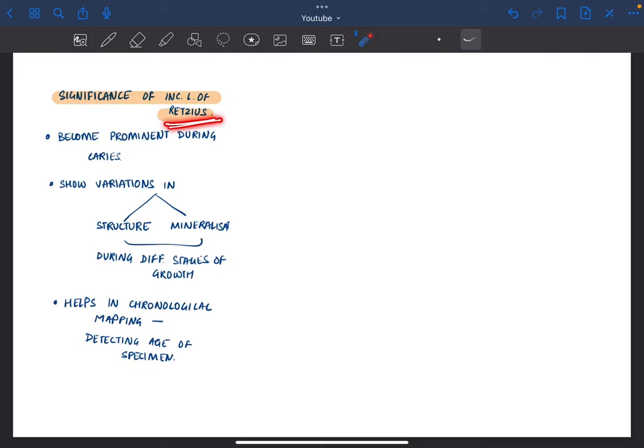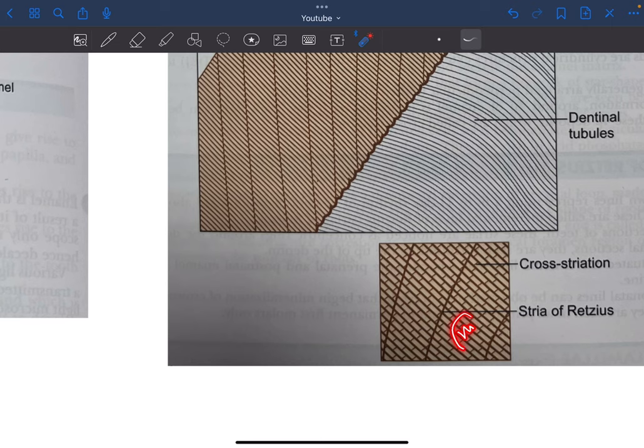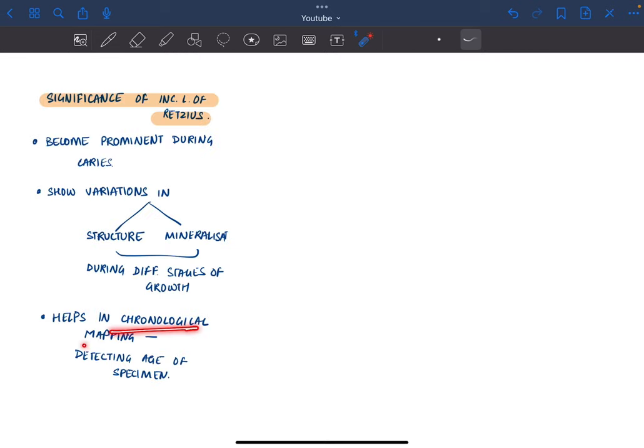Lines of Retzius are significant because they become prominent during caries development and show variation in structure and mineralization during different growth phases. The mineral composition of enamel differs across periods. They also help in chronological mapping, allowing us to identify the age of the specimen based on the incremental lines of Retzius present.